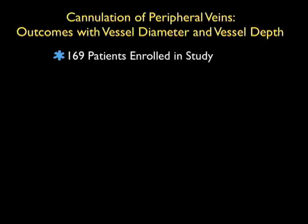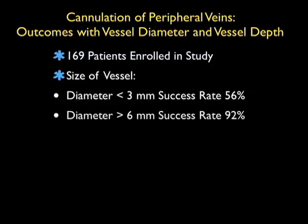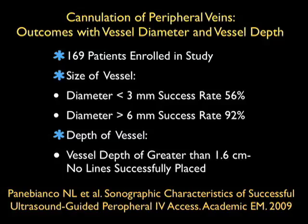This recently published study showed that it's crucial to select the correct target vessel when deciding to cannulate a deep arm IV. 169 patients were enrolled in the study, and it was determined that the size of the vessel directly correlated with the success rate of cannulation. A vessel with a diameter less than 3 mm correlated to a success rate of only 56%, while a diameter greater than 6 mm correlated to a success rate of 92%. Also, the depth of the vessel was very important, as no vessel deeper than 1.6 cm was successfully cannulated. A very nice study by Dr. Panibianco et al. in Academic Emergency Medicine, 2009.